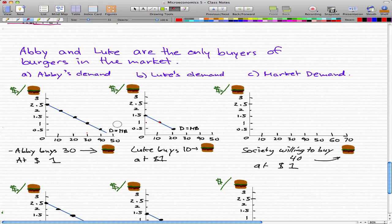From the graphs that I have here, Abby will buy 30 burgers at a dollar.